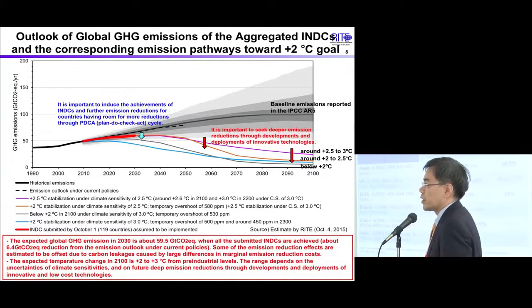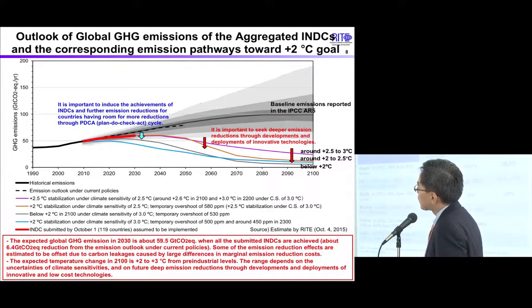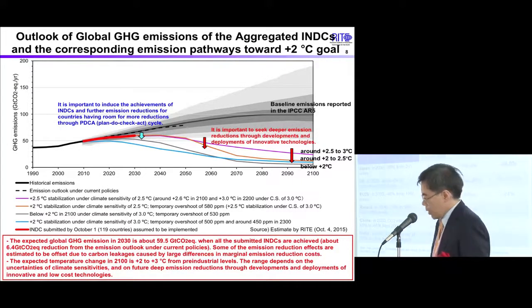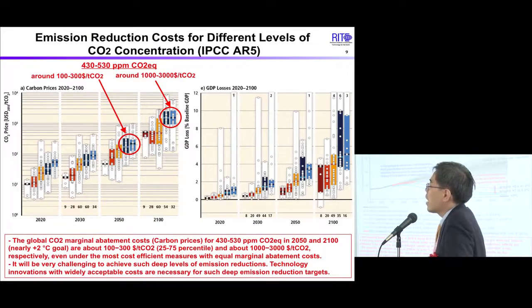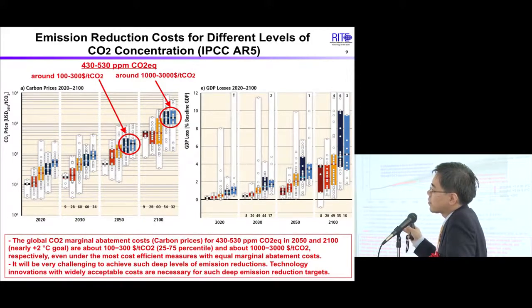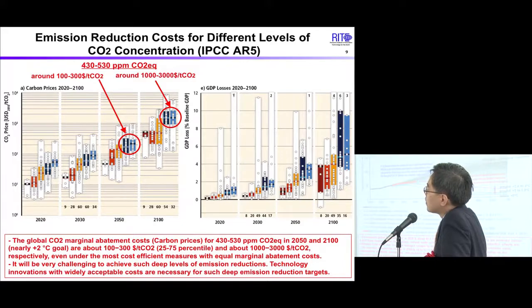This represents a large increase in China's emissions even if its target is achieved. Comparing from 2013 levels, Japan's target is 26% reduction, the US is 18% to 21%, and the EU is 24%. This outlook of global GHG emissions from the aggregated INDCs covers 119 countries, which is almost all INDCs submitted so far.